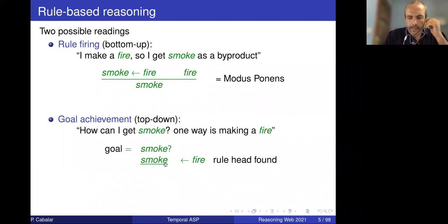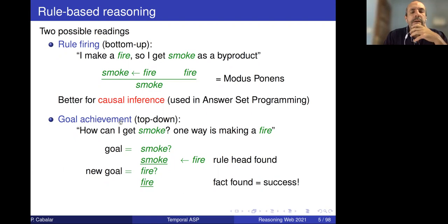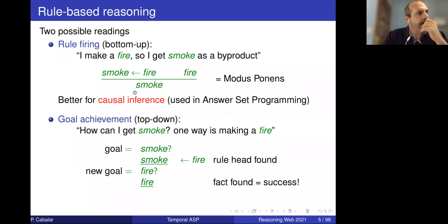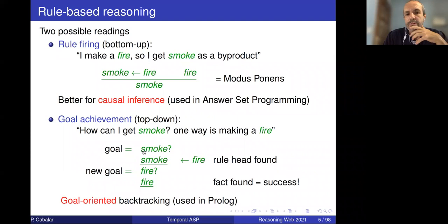These two readings give rise to two different orientations in logic programming. The first reading has to do with causal inference, and answer set programming uses this bottom-up reading where rules are used to produce effects — very related to a causal rule. The goal-oriented backtracking procedure, where you look for a goal and then look for new subgoals until you reach the final objective, is what is used in the logic programming language Prolog.